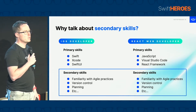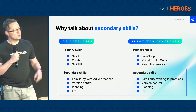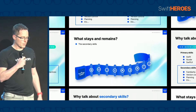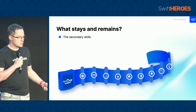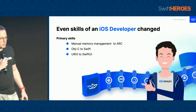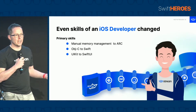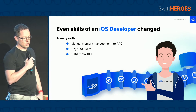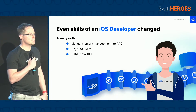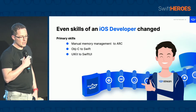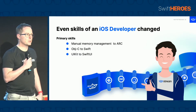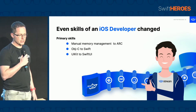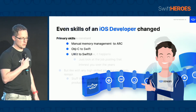Whatever you do in your career, your secondary skills are very likely to carry over to whatever you're going to be doing in the future. The secondary skills stay and remain. The primary skills are things that change with time. For instance, with iOS development we had manual memory management that switched to ARC, Objective-C went to Swift, and UIKit is transitioning to SwiftUI. Very likely at the next WWDC, SwiftUI will be much more important for us as iOS developers. I expect our primary skills to change each year — you have to try and stay up to date.